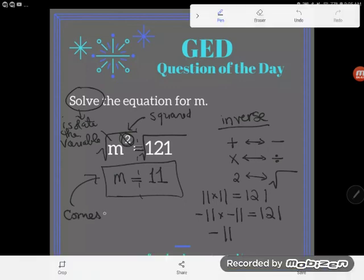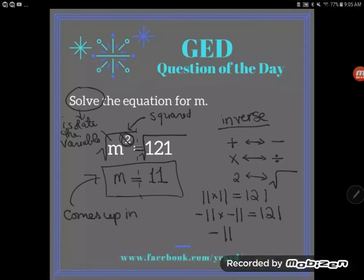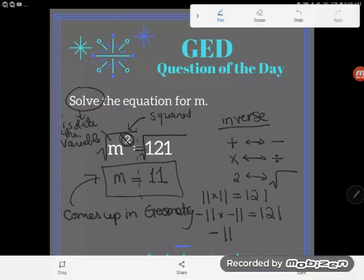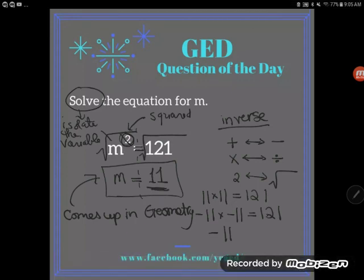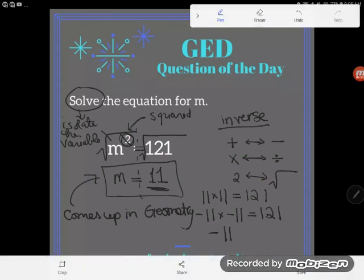But because this skill comes up most often in geometry on the GED, usually when I'm looking for the side of a right triangle, you would never have the side of a triangle that's a negative number. And so a lot of times in the GED level math, we just ignore the negative answer and just stick with that positive answer. So yes, M equals 11 is the only answer you're probably going to need for your GED.